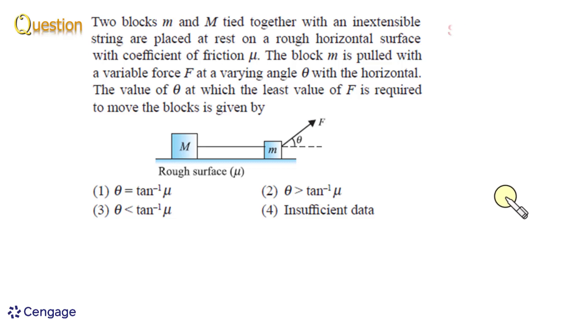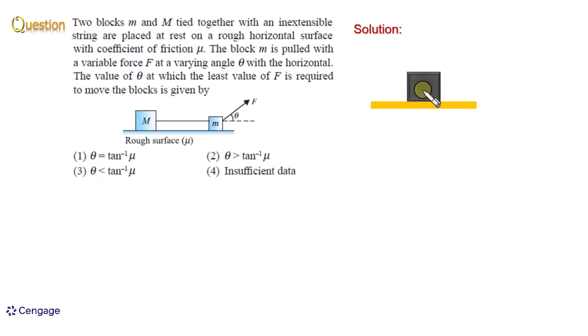For analyzing this situation, let us revise the concept of angle of friction. Suppose we have a block placed on rough horizontal surface with coefficient of friction μ. We are interested to move this block by applying the least force. Suppose this least force applied is F minimum. If we apply the force F minimum at angle φ with the horizontal, and this φ should be equal to angle of friction,